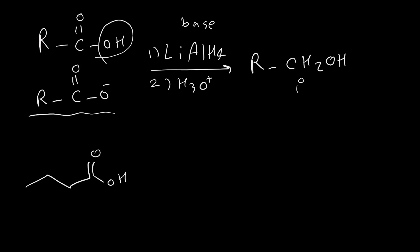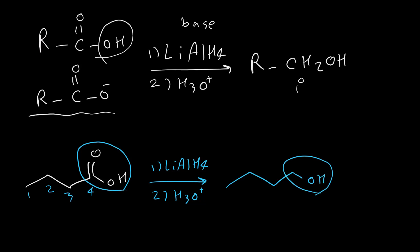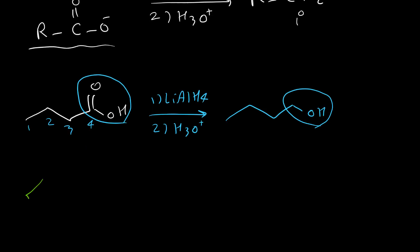Here is the first example: lithium aluminum hydride, then neutralization. All we need to do is convert the carboxylic acid functional group to a primary alcohol. We count four carbons, so our product also has four carbons, but the carboxylic acid group converts to CH₂OH.